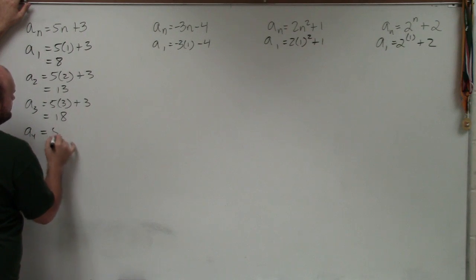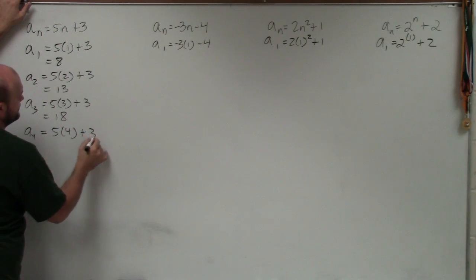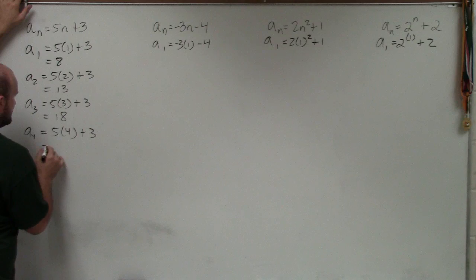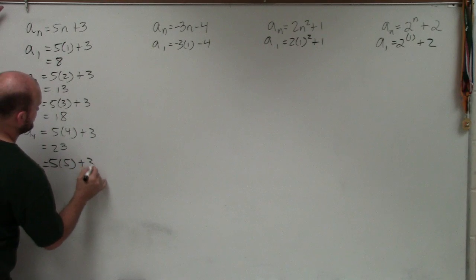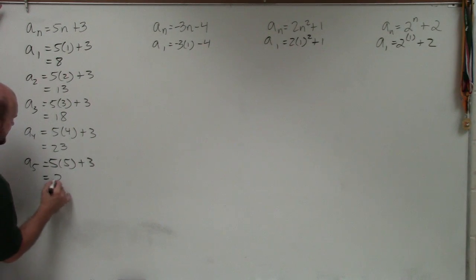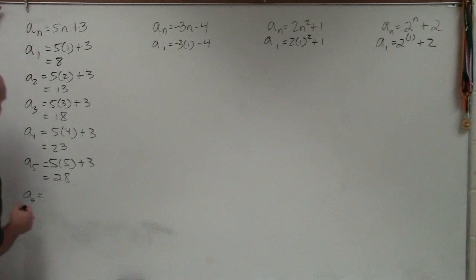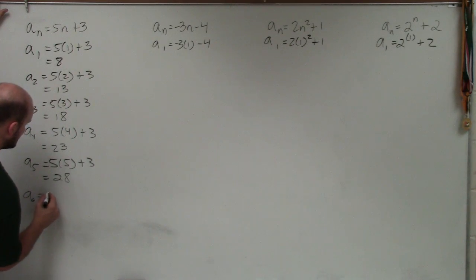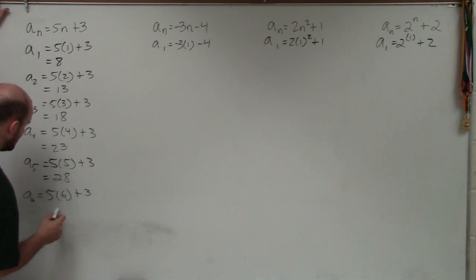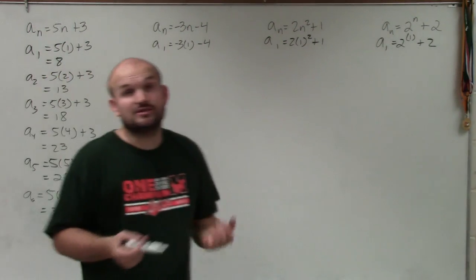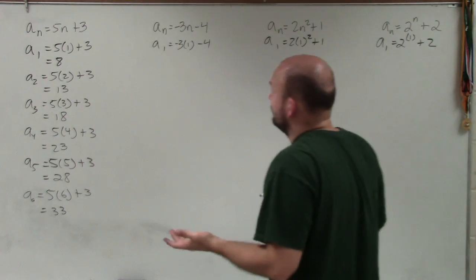A sub 4 equals 5 times 4 plus 3. 5 times 4 is 20 plus 3 is 23. A sub 5 is 5 times 5 plus 3. 5 times 5 is 25 plus 3 is 28. And a sub 6. 5 times 6 is going to be 30 plus 3 is going to be 33. So basically what we're going to do is you're going to do that for all of the rest of the problems.